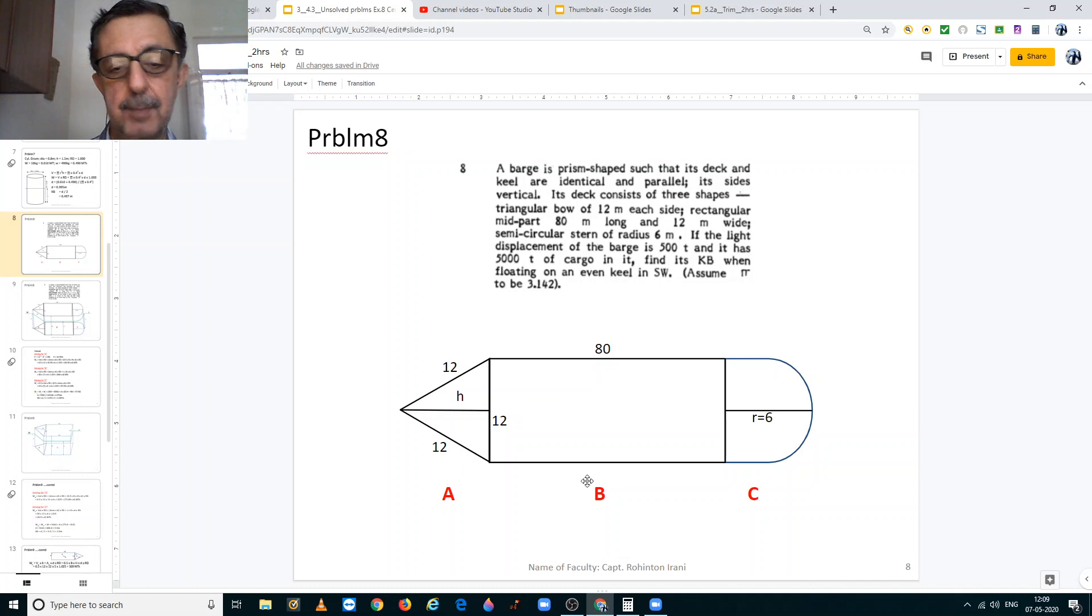So for ease of calculation, I have divided this into three parts. A is for the triangular bow. B is for the rectangular mid part. And C is for the stern, semicircular stern.